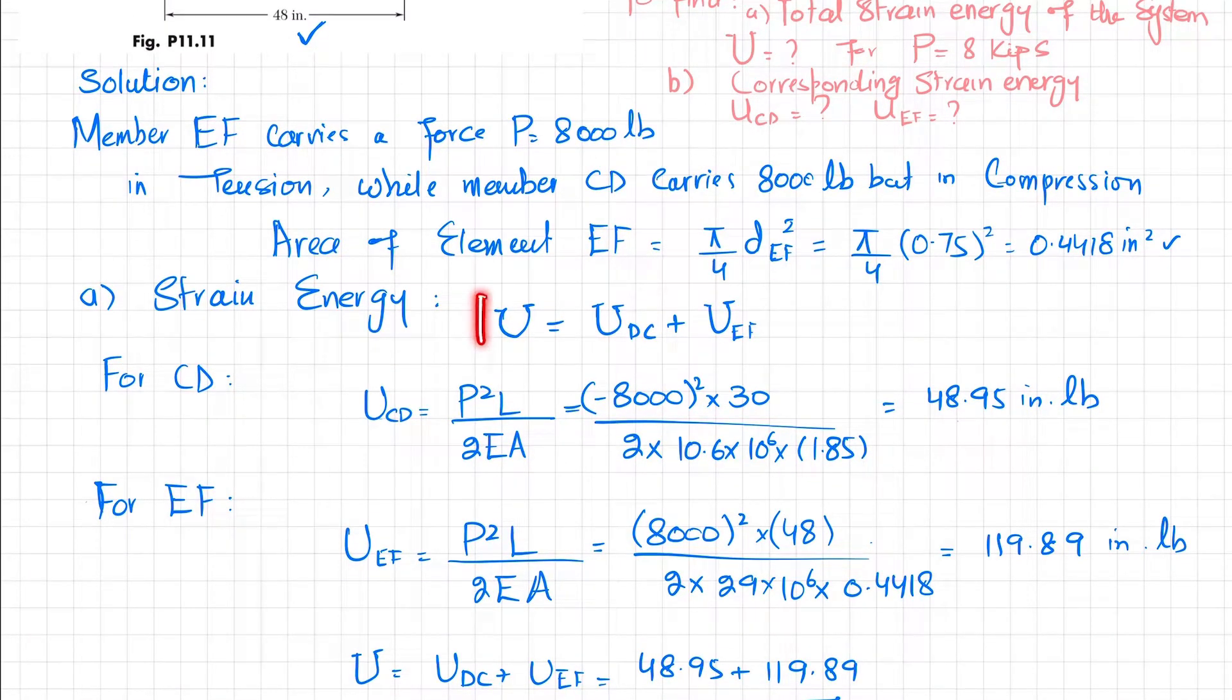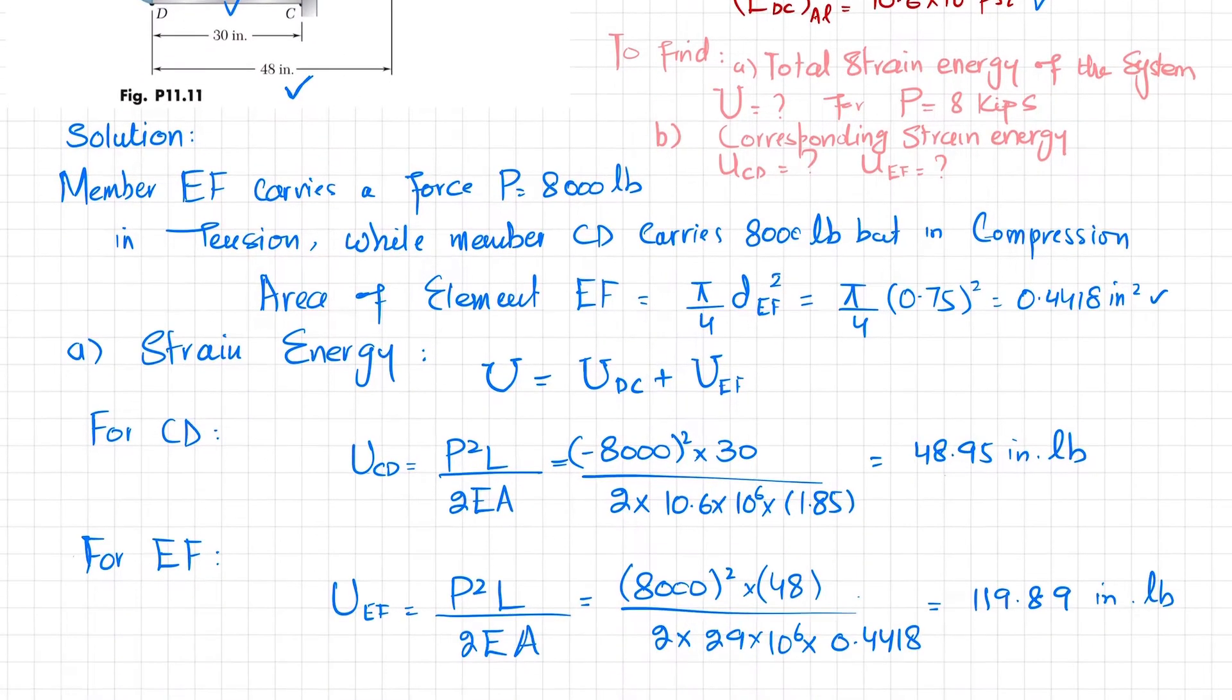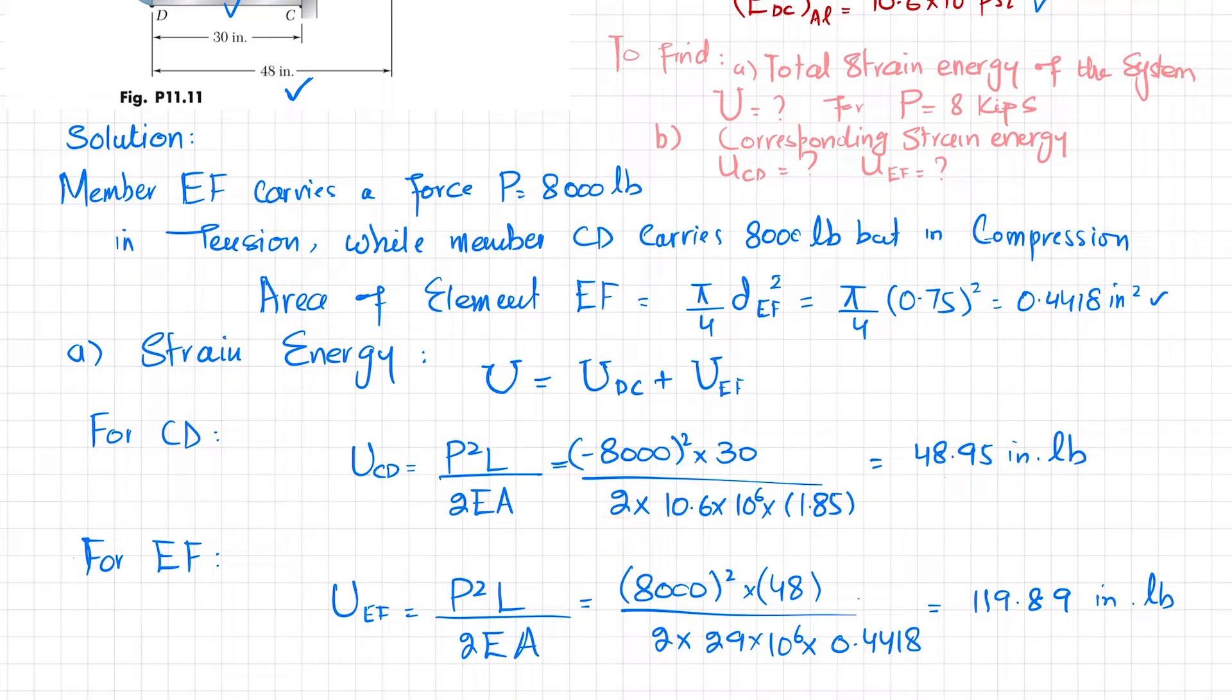For CD, strain energy equals P²L / (2EA). P in CD is compression, so it's -8000 squared times length of CD, which is 30 inches, divided by 2 times E of aluminum, which is 10.6 × 10^6, times area 1.85. When you calculate it, you will get the total strain energy in aluminum pipe CD as 48.95 inch-pounds.